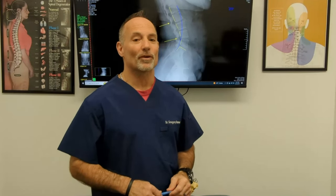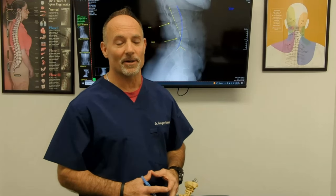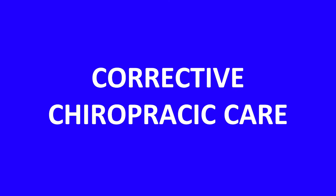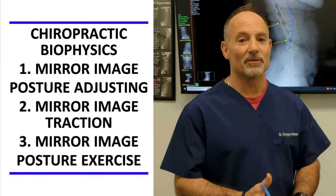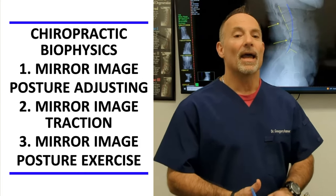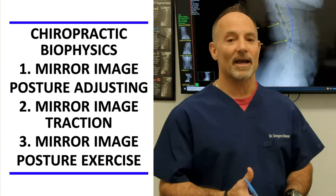I'm Dr. Gregory Kramer, doctor of chiropractic. I've been practicing for over 30 years. I'm a certified corrective care chiropractor by chiropractic biophysics, and I've been helping people since 1989 — I've probably seen over 200,000 office visits. I specialize in corrective care, meaning we evaluate your spine with an engineering approach, compare it to a normal spinal model, and apply chiropractic biophysics methods: mirror image adjusting, mirror image corrective remodeling traction, and mirror image specific targeting exercises.